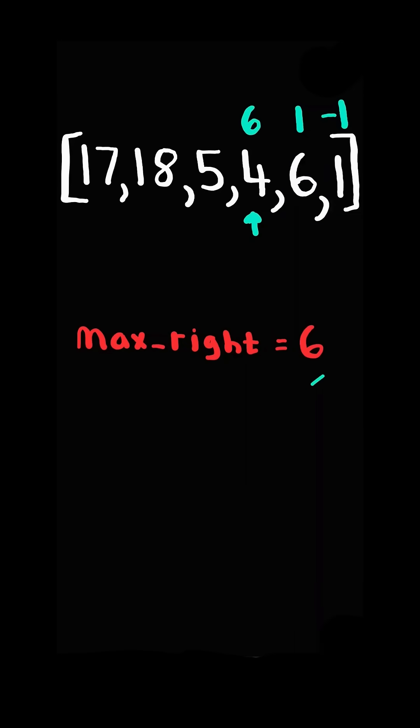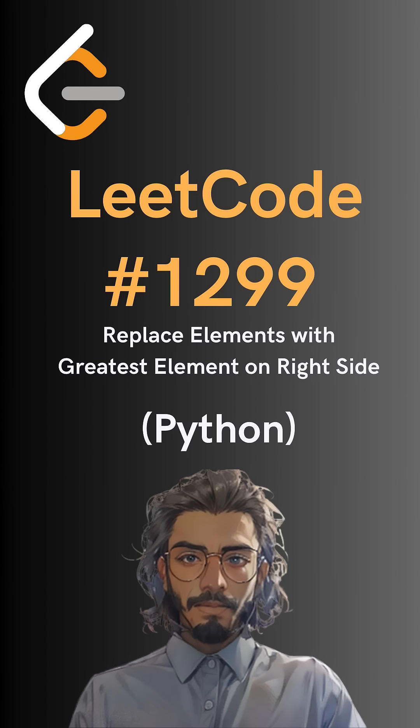We update the value to max_right and we do not update max_right since it's greater than the current value. And here is the code to do so. Please like and follow for more.